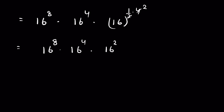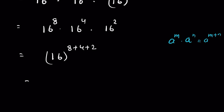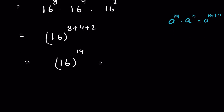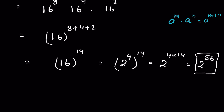Using the identity a^m times a^n equals a^(m+n), we can add the exponents: 16^(8+4+2) = 16^14. Writing 16 as 2^4, we get (2^4)^14 = 2^(4×14) = 2^56. This is our solution for Method 1.